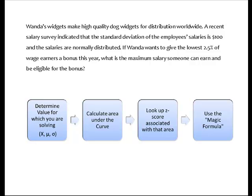So we're going to use this four-step process. We're going to determine the value we're solving for, calculate an area under the curve, look up a z-score, use the magic formula.